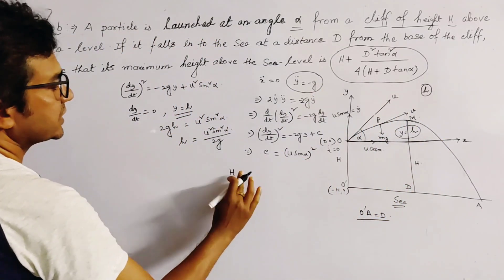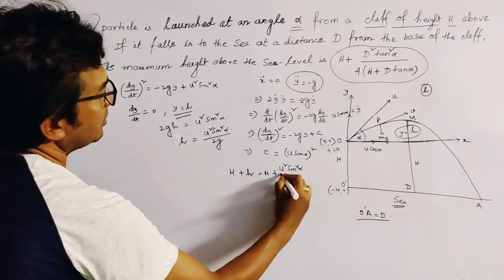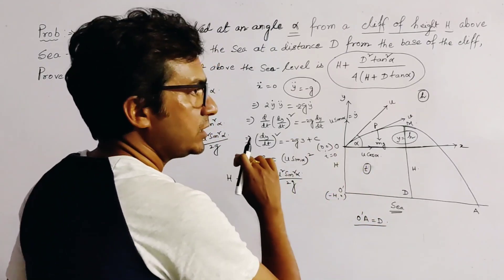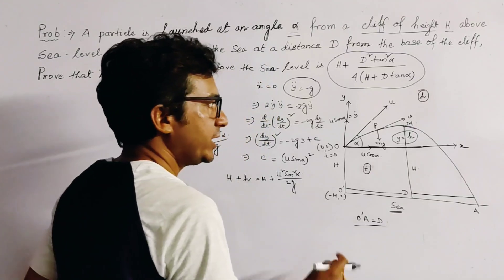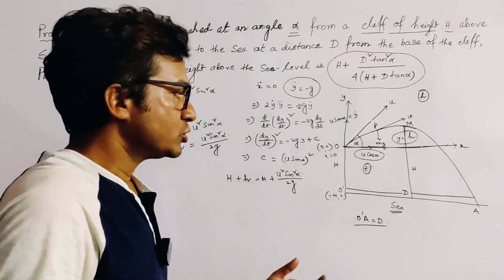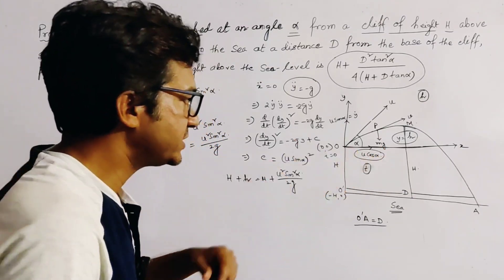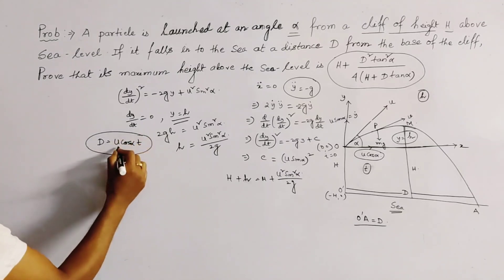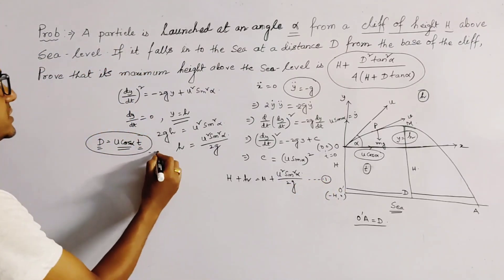Let T be the total time taken by the particle from O to A, where the horizontal range is D. Since there is no horizontal acceleration, only horizontal velocity U cos alpha, to travel horizontal distance D in time T we get the relation: D equals U cos alpha times T. We label this as equation (1) and the expression for h as equation (2).